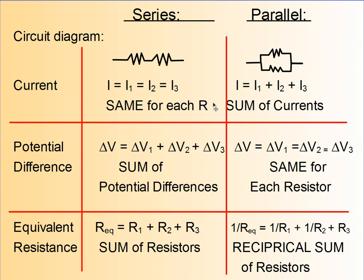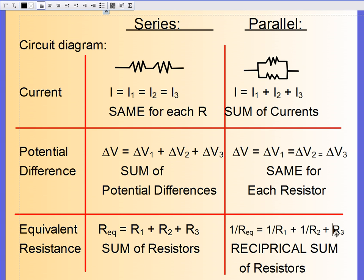While in parallel, the current, the battery current is the sum of the currents through all of the resistors, while the voltages stay the same. And the equivalent resistance is the reciprocal sum of the resistances.